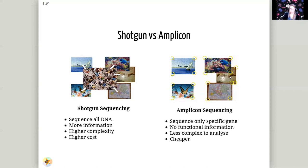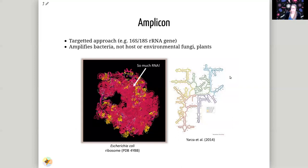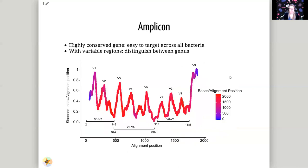So shotgun and amplicon sequencing are the two main approaches in microbiome analysis. For amplicon sequencing — the targeted approach — we often use the 16S or 18S ribosomal RNA gene. This gene is chosen because it is present in all bacteria but not in eukaryotes or environmental fungi and plants, so you really target only the bacteria and archaea you want to sequence. Another reason this is a suitable gene is because it has highly conserved regions, which makes it easy to find and target these genes across all bacteria. In between the highly conserved regions are highly variable regions, which can be used to distinguish between different microbes taxonomically.